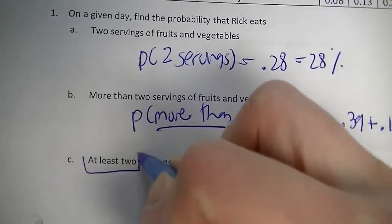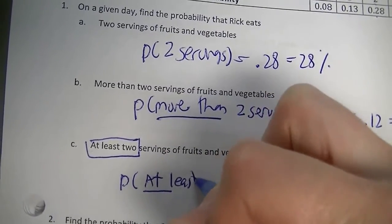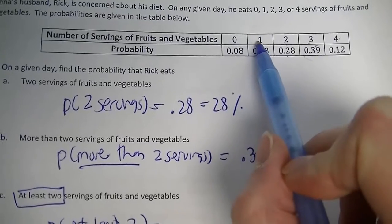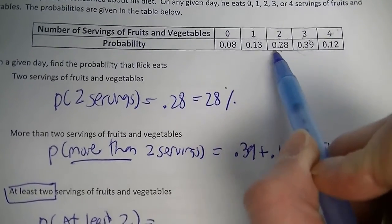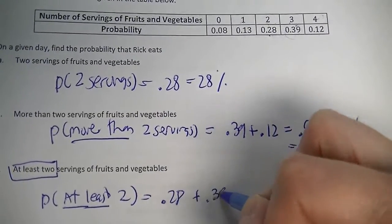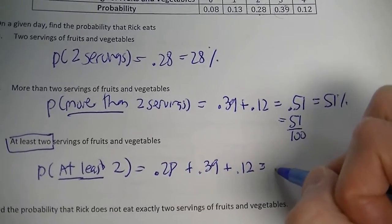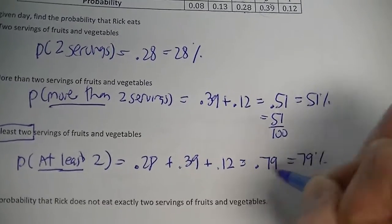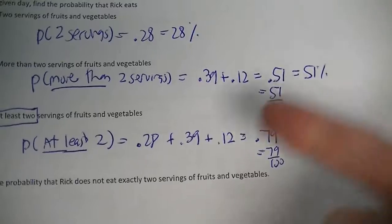The keyword here is 'at least two.' Zero and one servings are not at least two, so we skip those. Two servings — yes. Three servings — yes. Four servings — yes. So we add twenty-eight hundredths plus thirty-nine hundredths plus twelve hundredths. That gives seventy-nine hundredths, which is seventy-nine percent. You can write it as a fraction — seventy-nine hundredths — but it doesn't simplify.